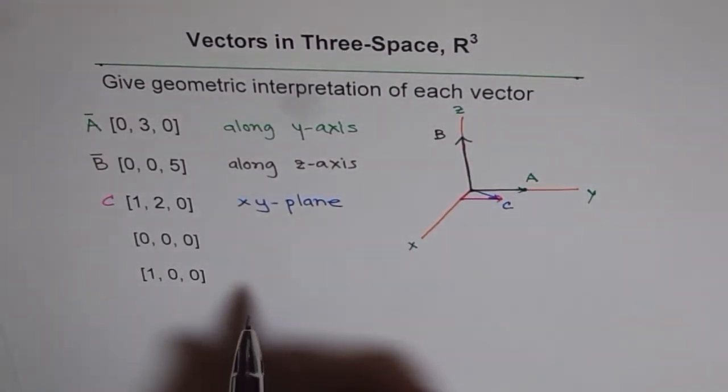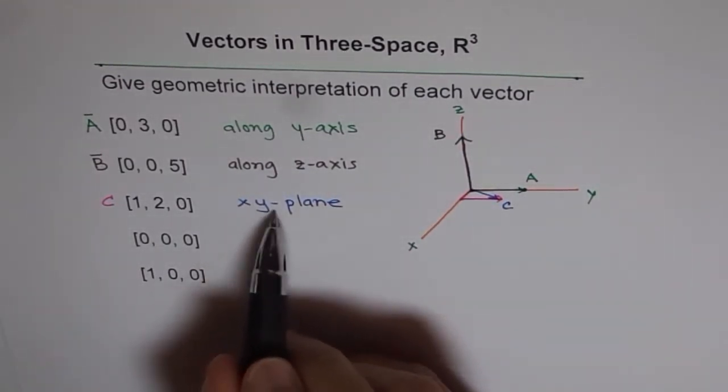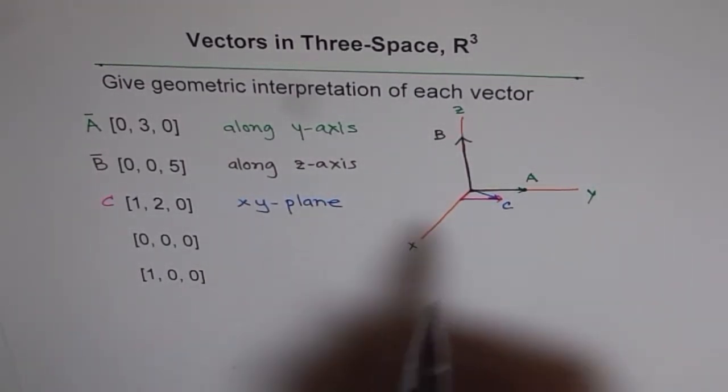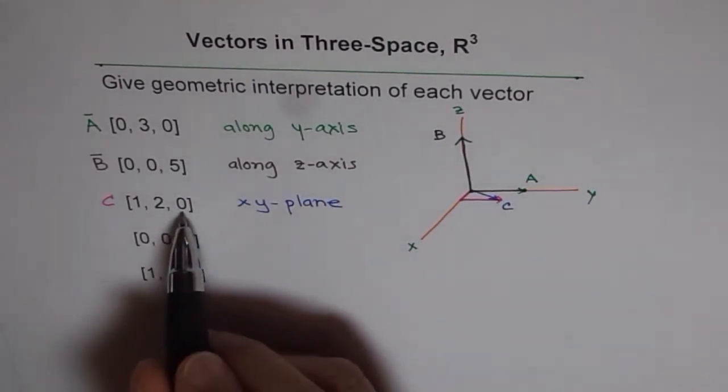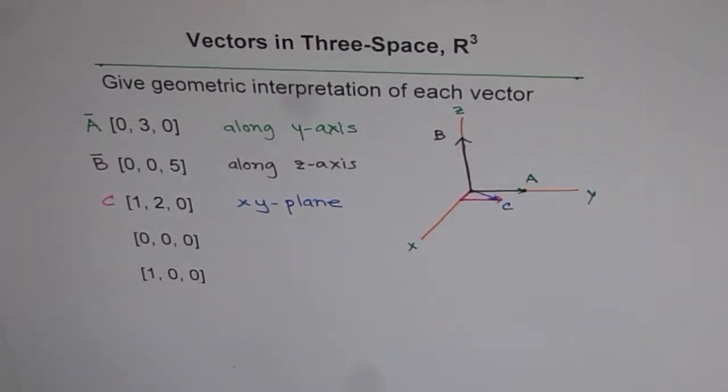In fact, any vector along the xy-plane or on the xy-plane will have z value as 0, as given here.